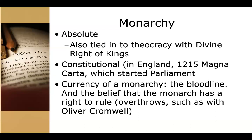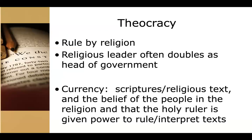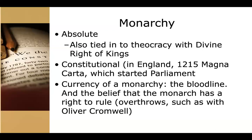Oliver Cromwell is an example of breaking entirely away from the monarchy — then it went back to the monarchy in England. So again, the currency of the monarchy is the bloodline. That is how they retain their power, their right to rule.